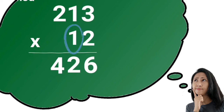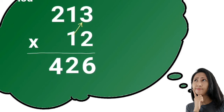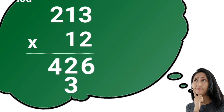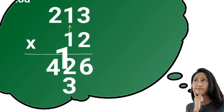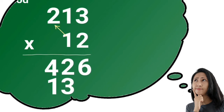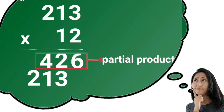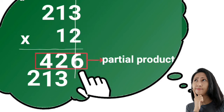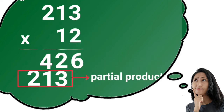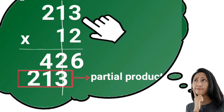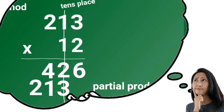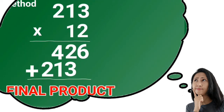Let's continue with the tenth place. One times three equals three. One times one equals one. And one times two equals two. The first partial product is the answer for multiplying the one's place of the multiplier to the multiplicand. The last digit of this partial product, which is six, is in the one's place. The second partial product is the answer for multiplying the tenth place of the multiplier to the multiplicand. The last digit of this partial product is in the tenth place. To get the final product, we have to add the two partial products starting from the lowest place value.